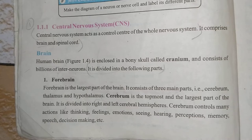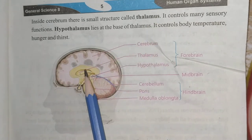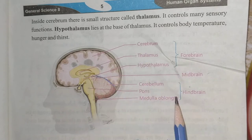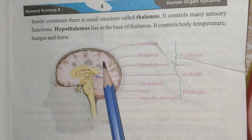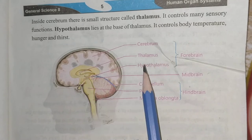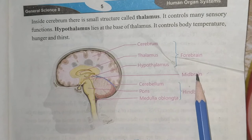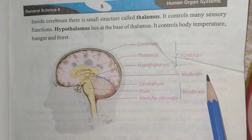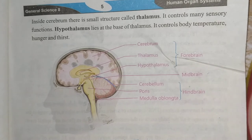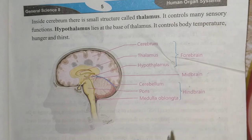Inside the cerebrum there is a small structure called the thalamus. In this internal diagram of the brain, you can see the different parts like cerebrum, cerebellum, and medulla. The thalamus controls sensory functions. The hypothalamus lies at the base of the thalamus and controls body temperature, hunger, and thirst. The midbrain is the small part of the brain present below the cerebrum; it receives information from the sense organs and passes it to the appropriate part of the forebrain.